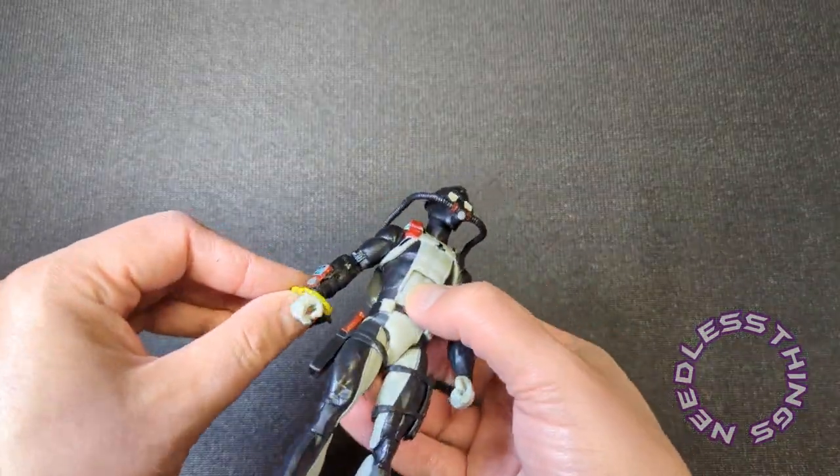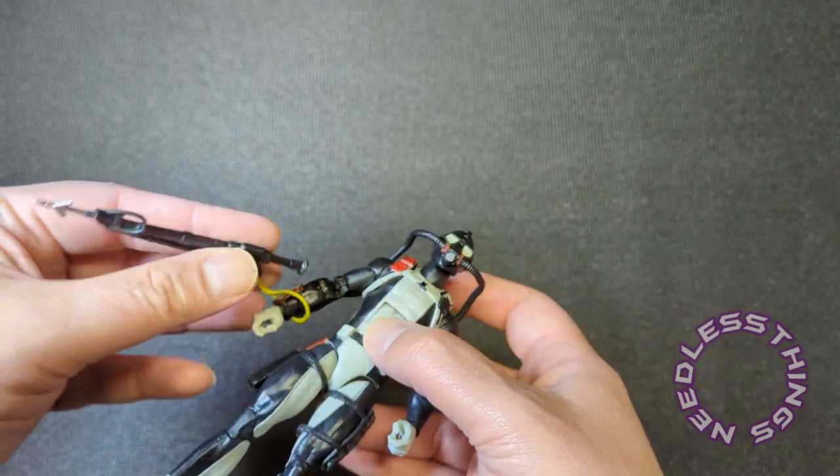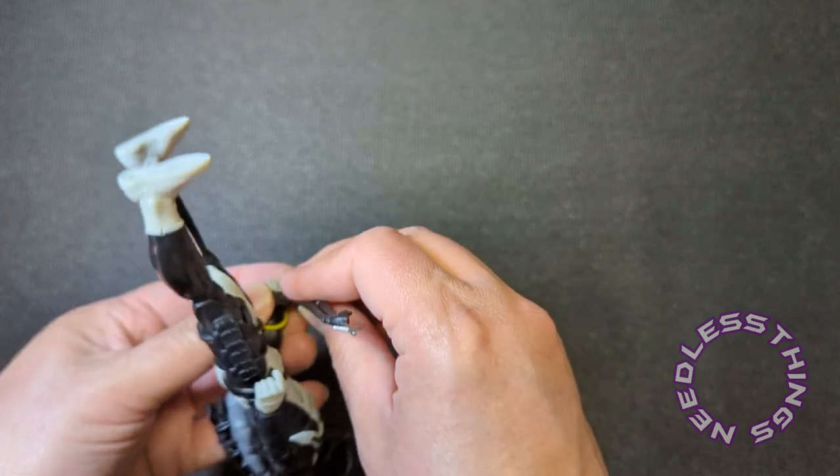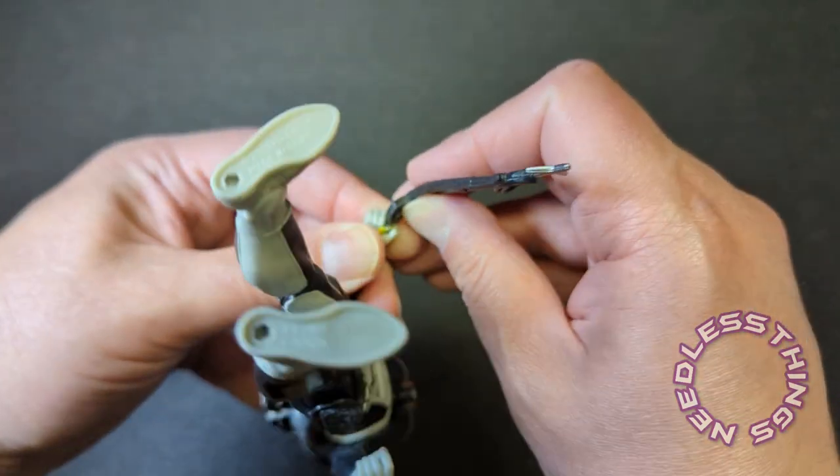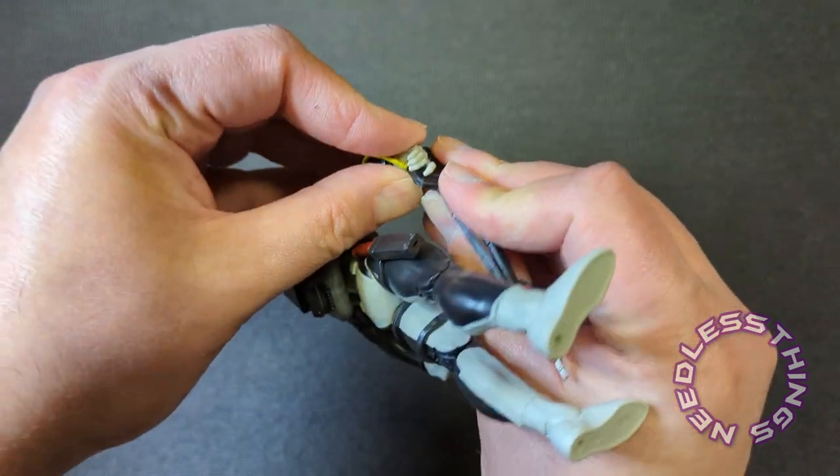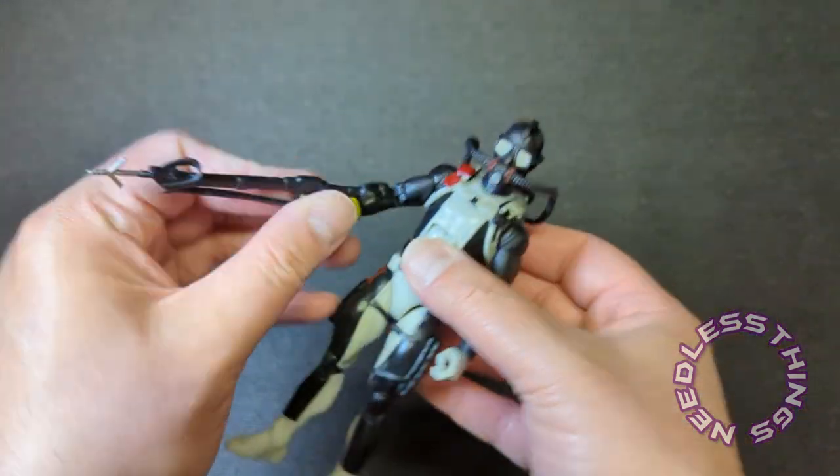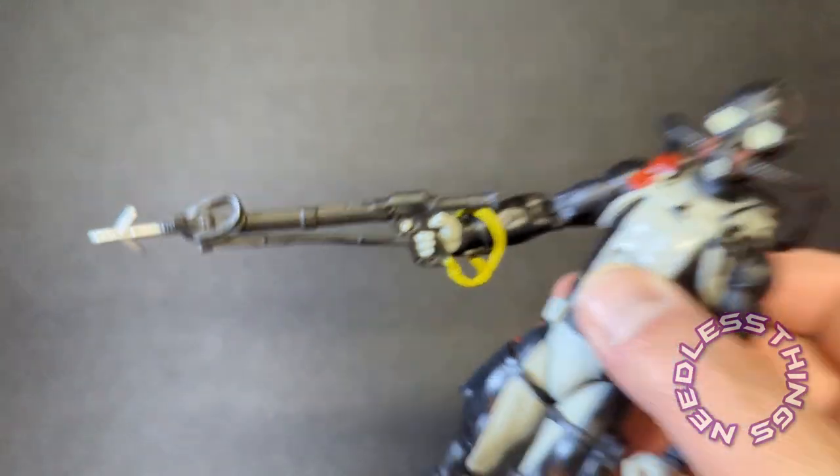So that's got the strap that goes around the wrist which is a nice touch. And then that - sorry I've completely changed my angle from how I normally do these because I had to stand up, so things are getting a little hectic here. So just like every other Classified figure, holds it perfectly, looks great, well done.